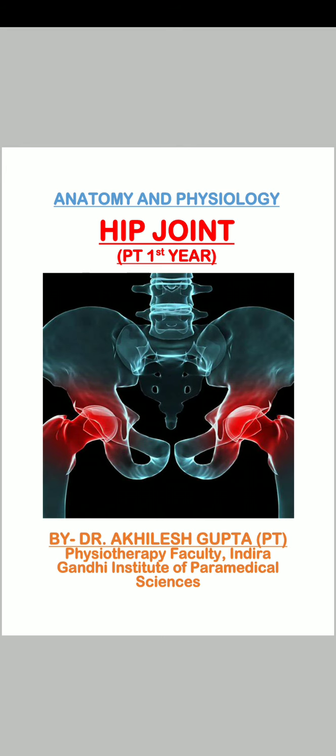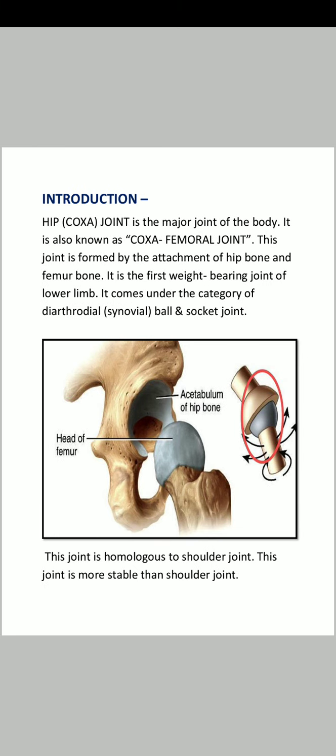First of all we will discuss what is the hip joint. Hip means coxa — the medical term for hip is coxa. It is a major joint of the body. It is also known as the coxofemoral joint, because coxa means hip and femoral means femur.